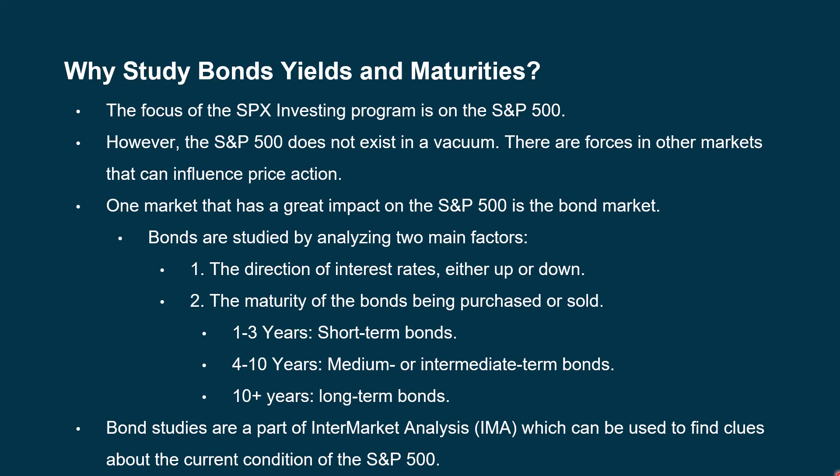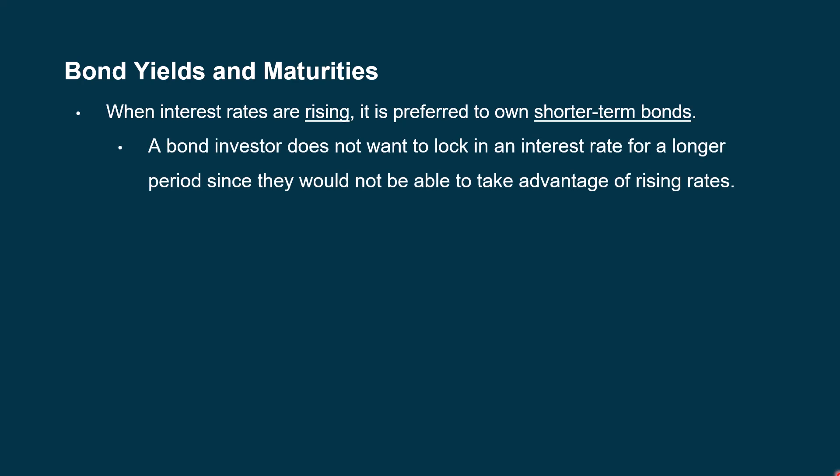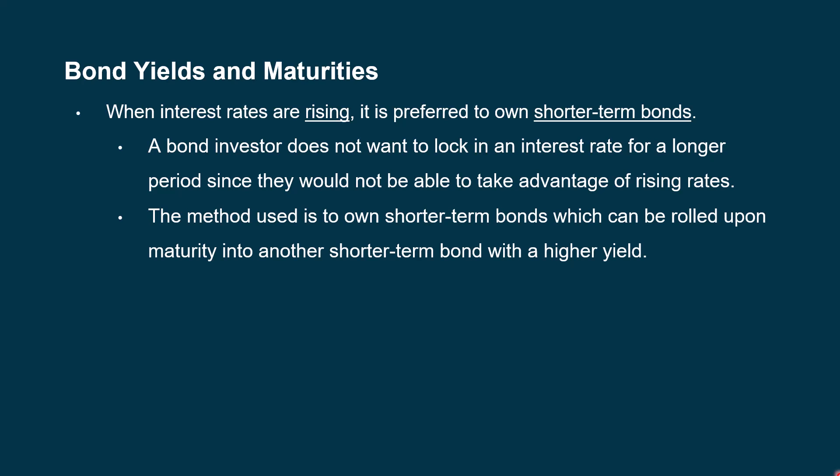Bond studies are a part of intermarket analysis, which I do a video on every week — I also acronym it as IMA. When interest rates are rising, it's preferred to own shorter-term bonds. That makes sense — why lock in a rate for a longer bond when you can roll a shorter-term bond and keep rolling it as rates go higher? A bond investor does not want to lock in an interest rate for a longer period since they would not be able to take advantage of rising rates.